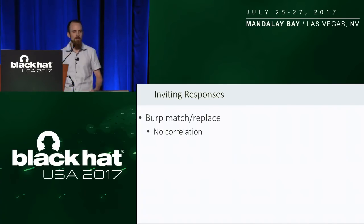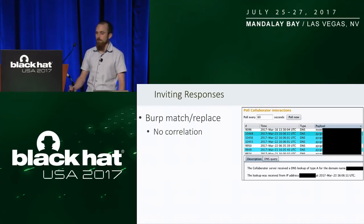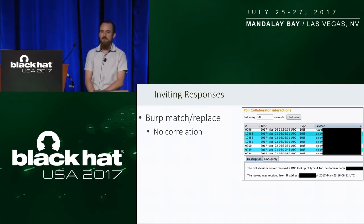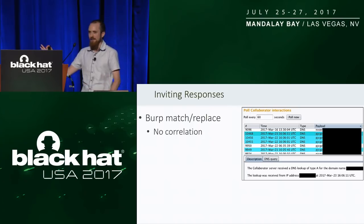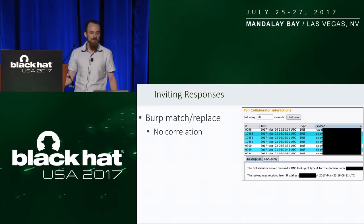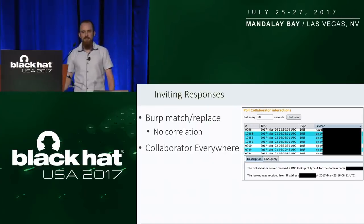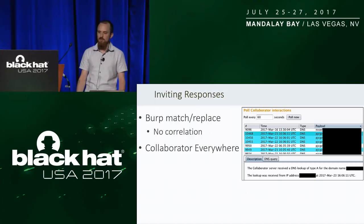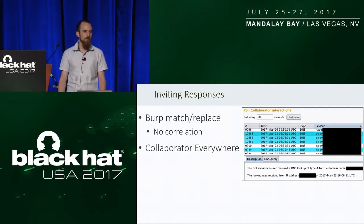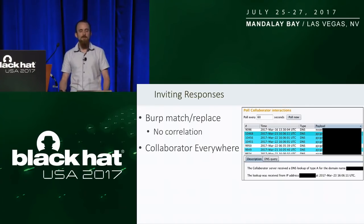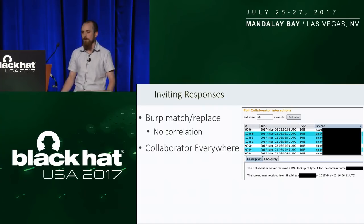I thought I could correlate by looking at the time the request was sent and the time the ping back happened, but that doesn't work. For example, one server decided to ping me once every 24 hours and just kept doing that for days — I was never able to find out what caused that. So I wrote Collaborate Everywhere, an open-source Burp Suite extension that injects unique ping back payloads into every request being proxied through Burp, and automatically correlates the request with the response and the ping back. Even if you get a ping back 12 hours after sending the payload, it will still link them together.